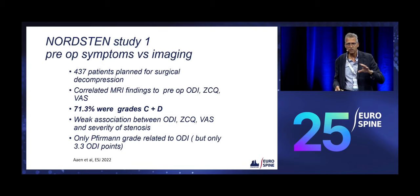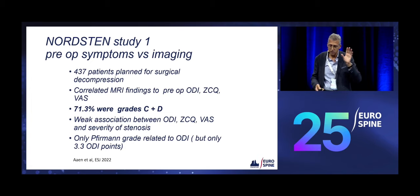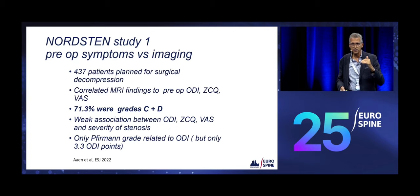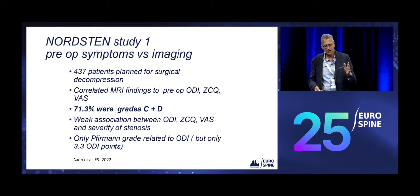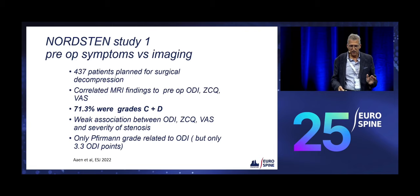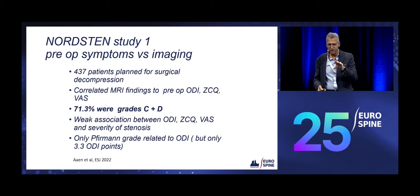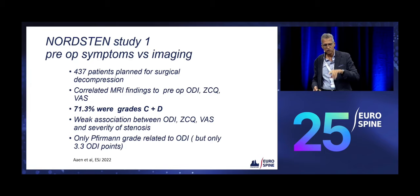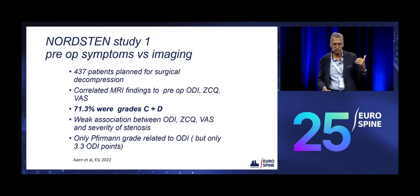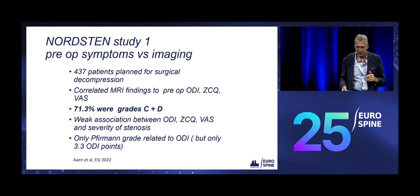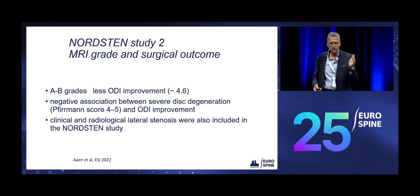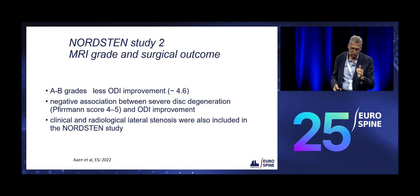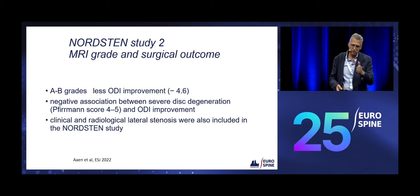I wanted to understand: is it worth operating on B's, A's and B's, or should we still do just the C's and D's? The Nordstrom study, which looks at the relation between pre-op symptoms and imaging, found that three-quarters of patients are grades C and D — all of us tend to operate mostly on C's and D's. They found a weak association between ODI, Zurich Claudication Questionnaire, and VAS and severity of stenosis. The second part showed that A and B grades have less improvement, but again the difference was small at 4.6 ODI.